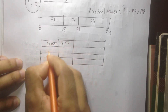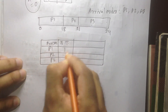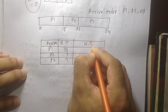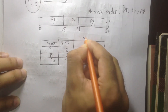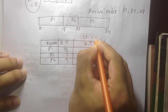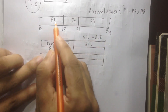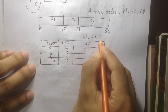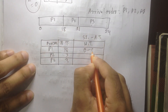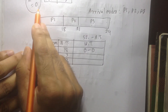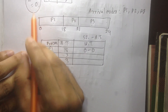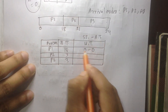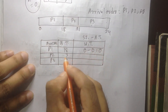First, we will see the P1, P2 process using the same formula. Waiting time = starting time minus arrival time. P1 process starting time is 0ms and arrival time is 0ms, so 0 - 0 = 0. That is the waiting time formula applied to each process.